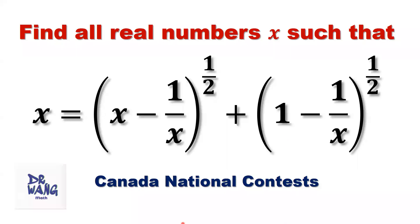Hello, everyone. I'm Dr. N. Here I ask the question: find all real numbers x such that x equals the square root of (x minus 1 over x) to the power of one half, plus the square root of (1 minus 1 over x) to the power of one half.